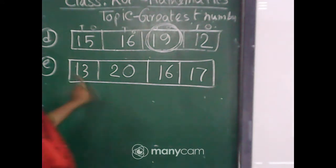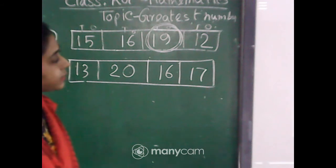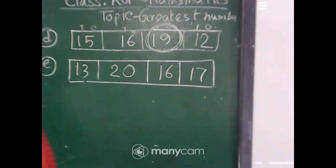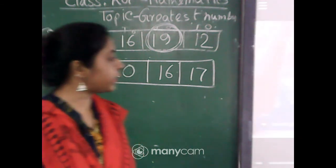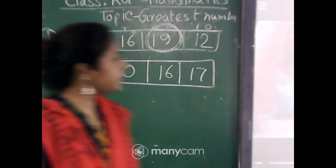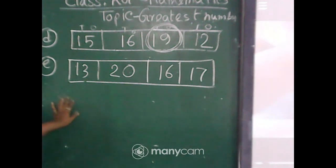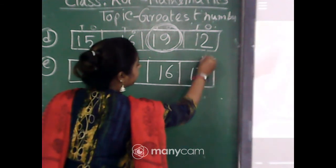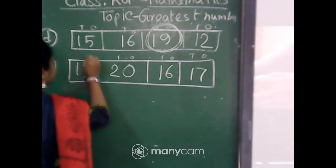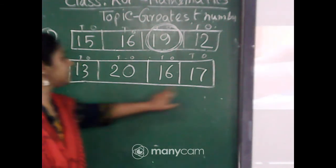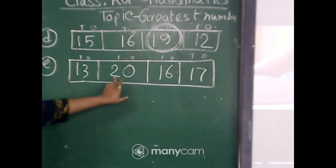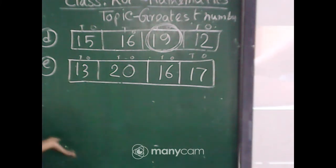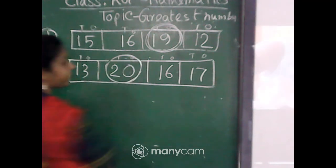Very good — correct answers from many students. For number E: 13, 20, 16, 17. Write the tens for each: 13, 16, and 17 all have 1 in tens, but 20 has 2 in the tens column. Since 20's tens digit is bigger than the others, 20 is the greatest number here. Very good!